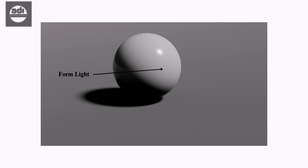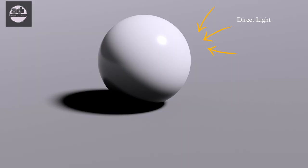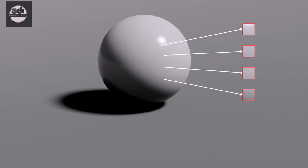The part of an object or subject that is in light is called form light. It receives direct light and is not affected by indirect light. It has changes in the tonal value.